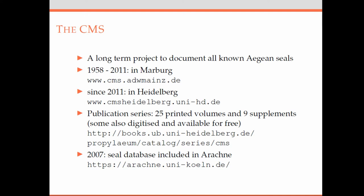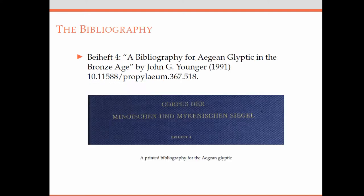Some of these volumes are also digitized. One supplementary volume has been of specific interest to me: supplementary volume number four, titled 'A Biography for Aegean Glyptic in the Bronze Age,' compiled by John Younger and available online.